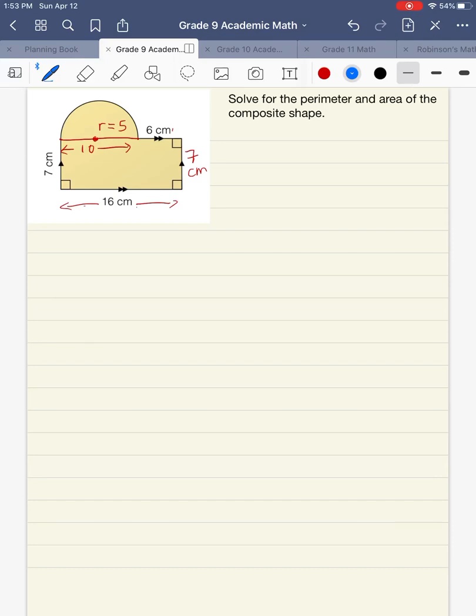So for the perimeter part, we actually have most of the information here. What we do need to do is find this part right here that I'm trying to highlight in green, which is the circumference of half of a circle or a semicircle. So let's just make note of that. For perimeter, we need to first find the missing circumference of the semicircle.